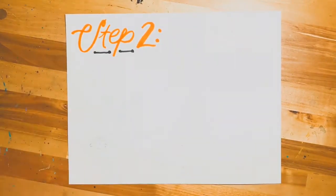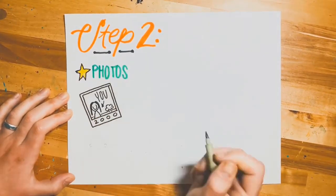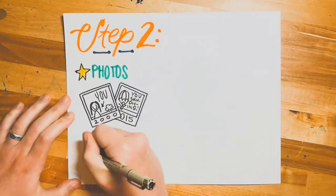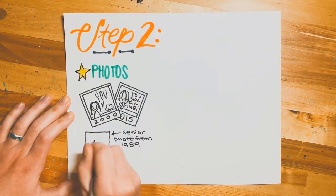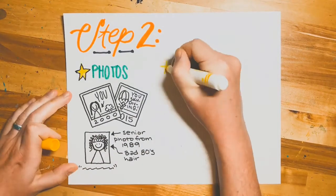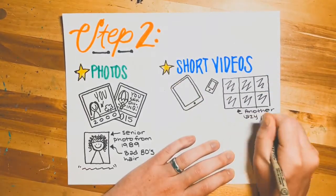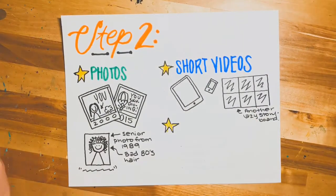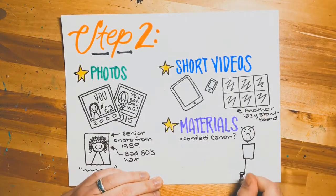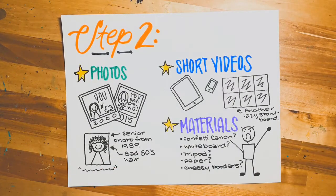For step two, feel free to gather some photos — perhaps one of you from the year 2000 so the kids think you're really old, maybe a photo of you skydiving. Or you could really freak the kids out and show them a photo of your senior picture from 1989 — look at you and your bad 80s hair and your funny inspirational quote. You could also make some short videos from your tablet or cell phone, drawing from your storyboard that you created earlier. And lastly, gather your remaining materials — maybe it's time to bust out the old confetti cannon you've been saving. Your janitors are going to hate you. Or you could grab a whiteboard, a tripod, some paper, maybe some of those cheesy borders they provide you with. The sky's the limit.